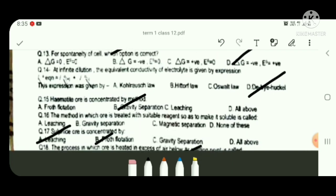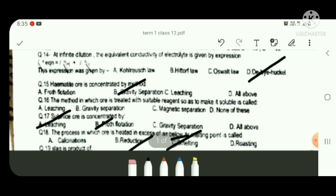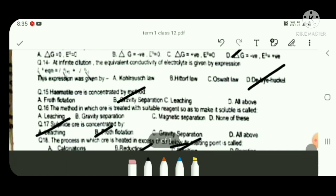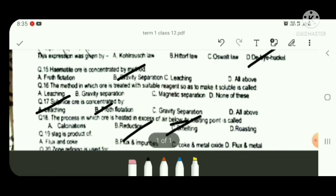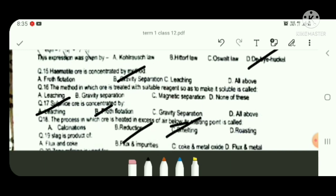Hematite ore is a concentrated by method, that is gravity separation. Method in which ore is treated with suitable reagent so as to make it soluble is called, the answer is